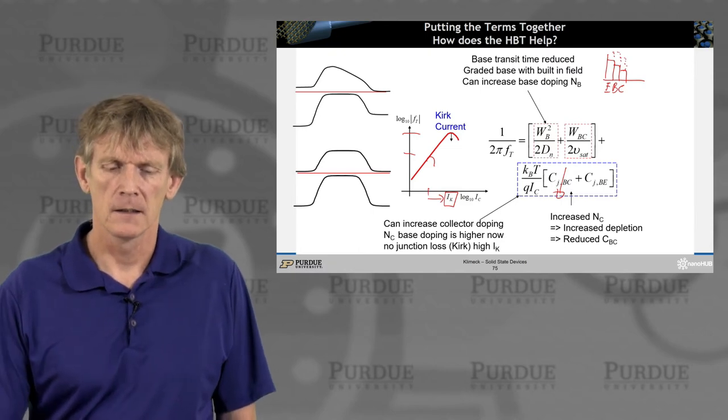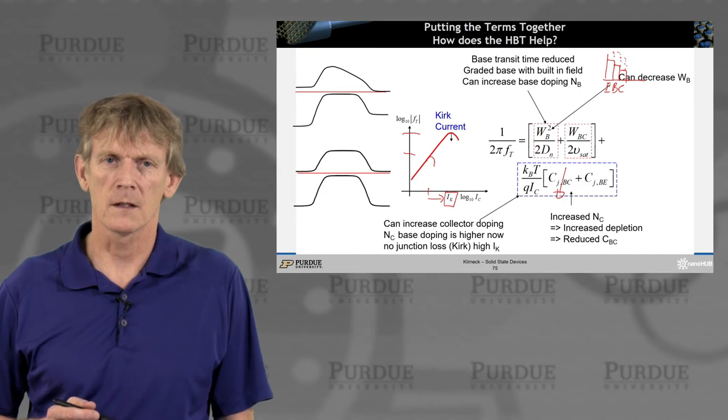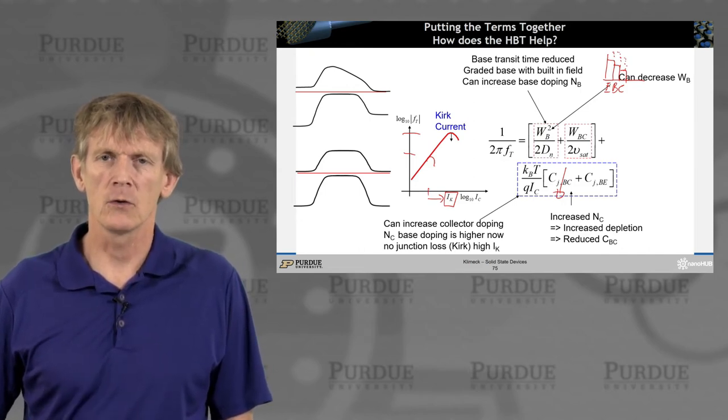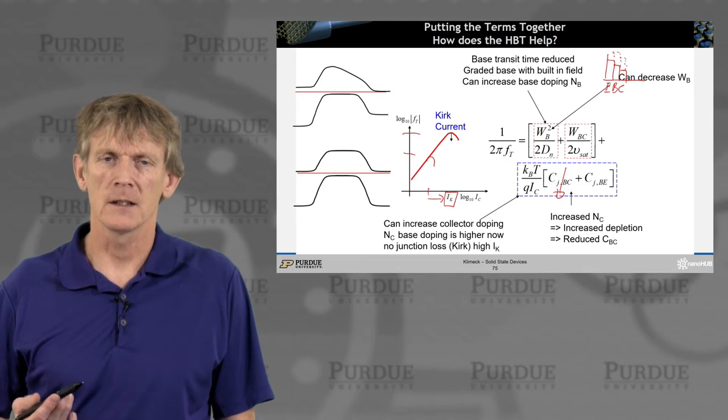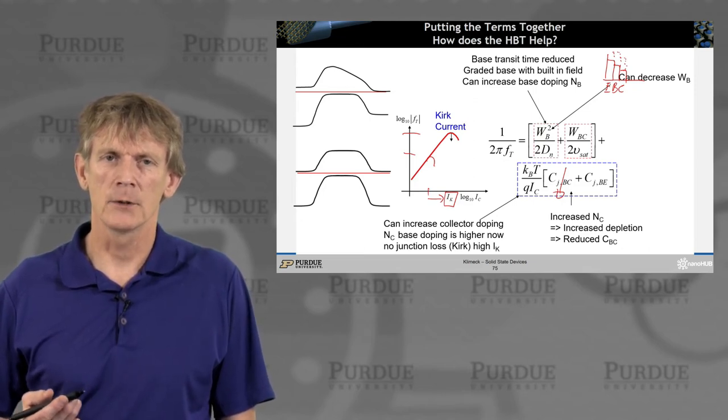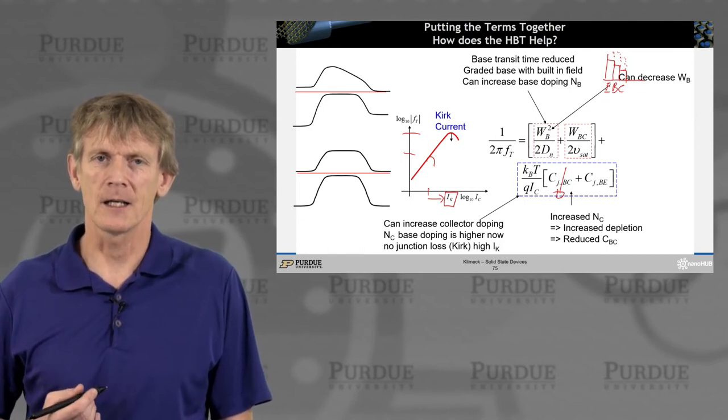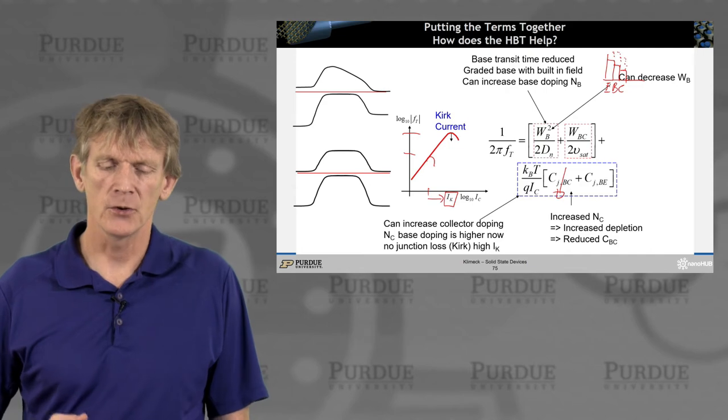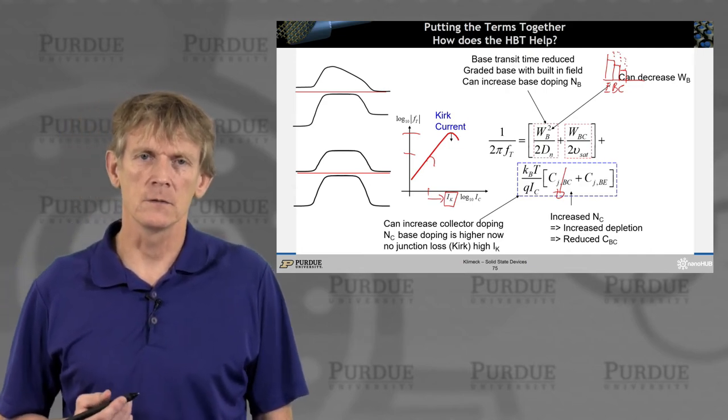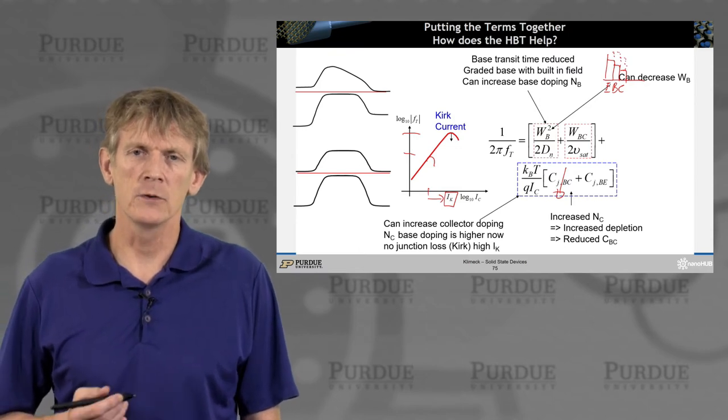Now, finally, we can also afford to decrease base width because we had ramped up the doping. So there's not much of a penalty anymore of punch through because the doping was ramped up and we can control the junctions tighter. So overall, doing this bandgap engineering affords you all kinds of design explorations that you couldn't do before.